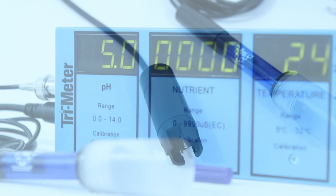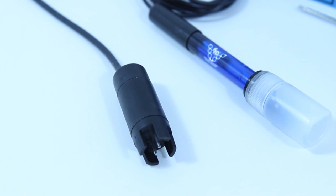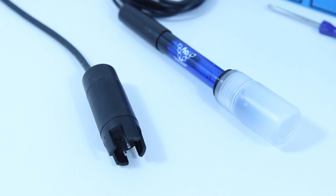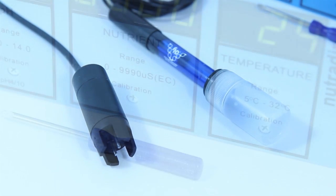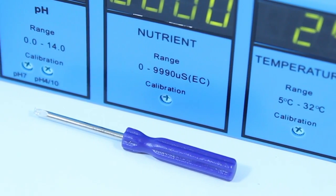The Trimeter is supplied with two detachable replaceable probes. Each one comes with plenty of cable, meaning you can mount the Trimeter wherever's most convenient for you. Each of the three probes on the Trimeter can be easily calibrated with a screwdriver provided.